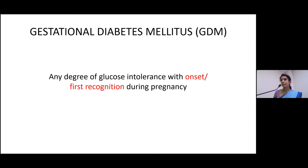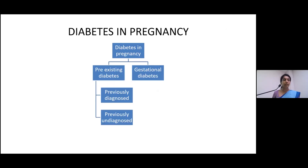This is the traditional definition of gestational diabetes mellitus: any degree of glucose intolerance with onset or first recognition during pregnancy. It's a spectrum. To simplify, diabetes in pregnancy could be pre-existing diabetes or gestational diabetes developed in the second or third trimesters. Pre-existing diabetes could be previously diagnosed — where the mother knows she has diabetes — or undiagnosed.